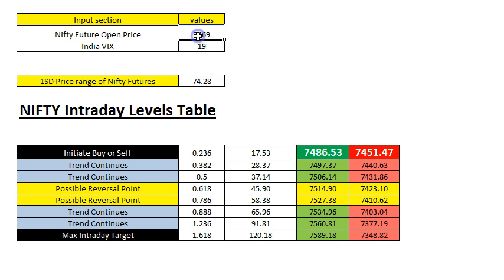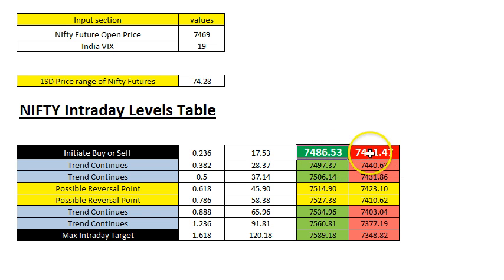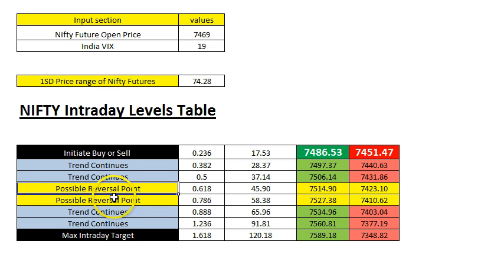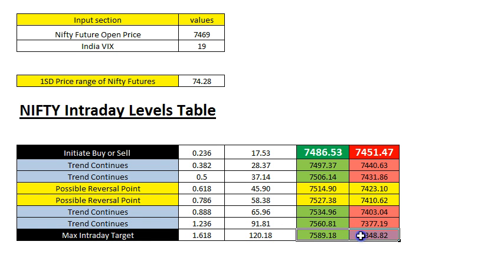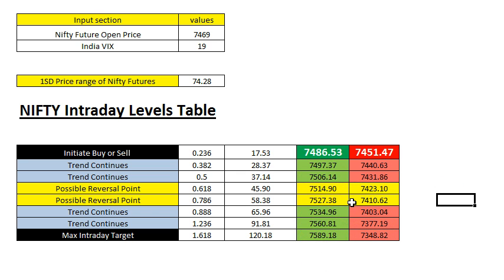With spot loaded at 7469, it says you need to initiate a buy above 7486 and a sell below 7451 on a 5-minute close. I would normally look to book profits in the yellow zone, which is the possible reversal point. The max target you will not get on all days — maybe 1 in 10 days Nifty will go and hit the max intraday target zone.